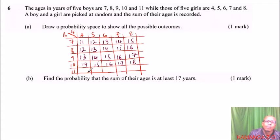We have 11 plus 4, that is 15. This will be 16. This will be 17. This will be 18, and this will be 19. So that is how you draw the probability space.